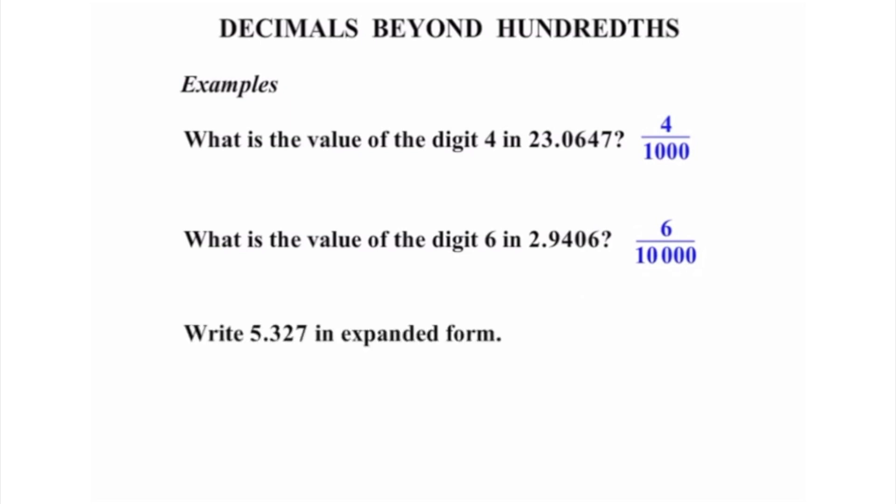Now we're asked to write 5.327 in expanded form. So let's just write the number down again: 5.327 equals. The first one is in the ones column, so 5 times 1, then we write plus. Now the 3 is in the tenths column, so we're going to write 3 times 1/10, and then plus. After tenths comes hundredths, so that 2 is in the hundredths column, so we have 2 lots of 1/100, and then plus again. Moving to the 7, it's in the thousandths column, so we have 7 times 1/1000.